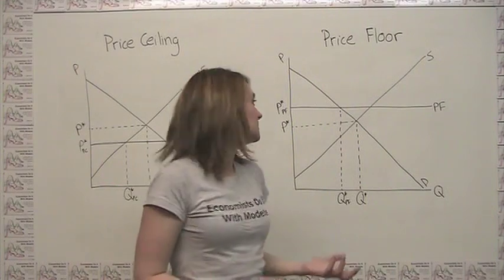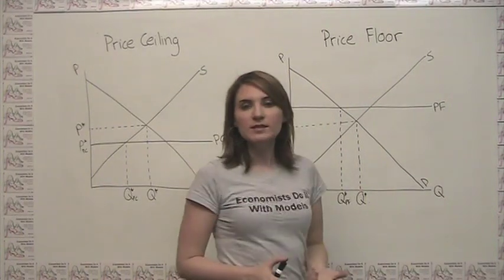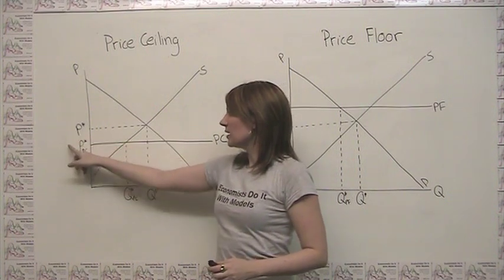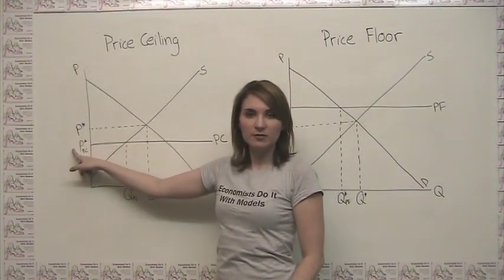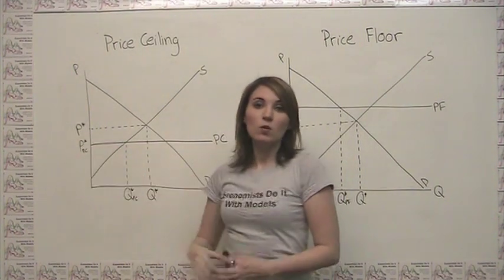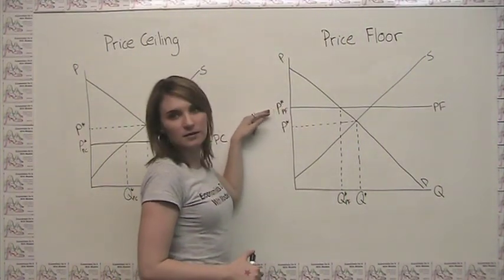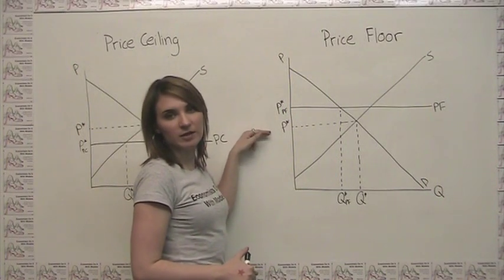On the other hand, when we're thinking about the price that occurs, with the price ceiling, we get a decrease in price from our free market outcome price. Whereas with the price floor, not surprisingly, we get an increase in equilibrium price from our free market outcome.